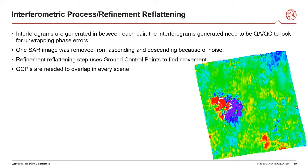For this study, one image was removed from both the ascending and descending tracks because of the noise it caused. The next step is refinement and flattening, and that uses ground control points to find movement in your scene. You can either have these points collected out in the field, or you can also do them in the program itself. These ground control points need to overlap in every single scene, so sometimes you need a lot of them if you have a very low coherence area. These ground control points are showing relative movement — you're saying that this is where it is stable, and the other areas are where it moved.